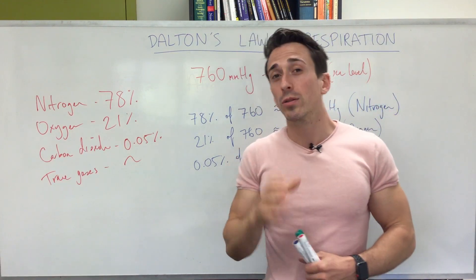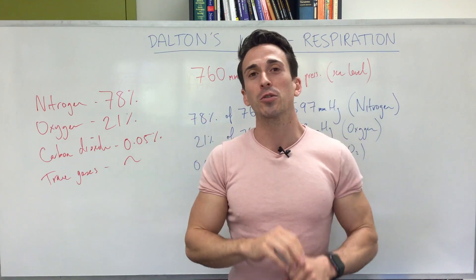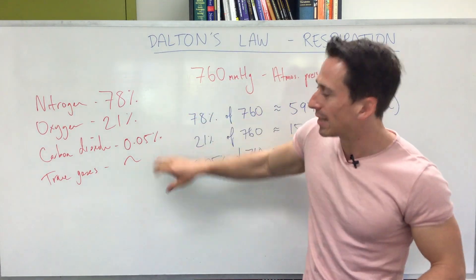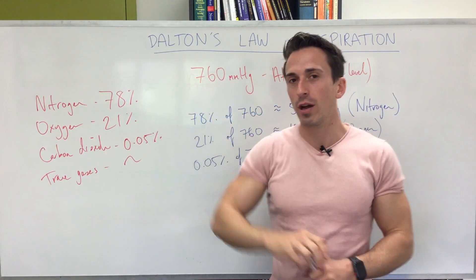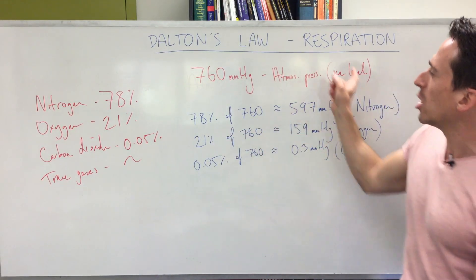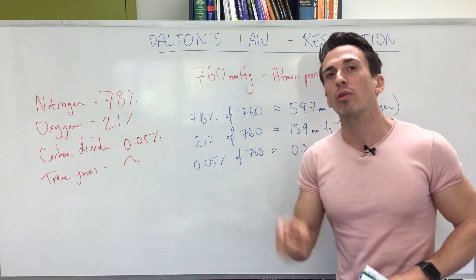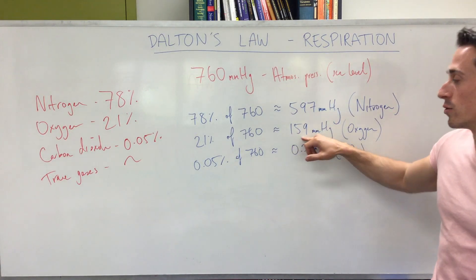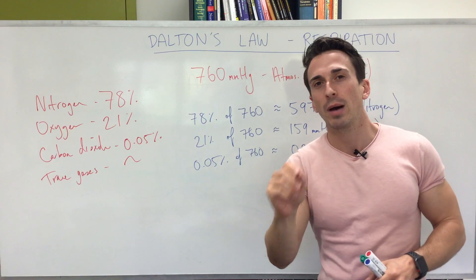Now why is this relevant clinically? It's relevant when it comes to Henry's law. Henry's law states that when looking at an individual gas or a mixture of gases, what matters are the partial pressures — that's what these individual pressures are called. The atmospheric pressure is 760 mmHg, the partial pressure of nitrogen is 597, the partial pressure of oxygen is 159, and the partial pressure of carbon dioxide is 0.3 millimeters of mercury.